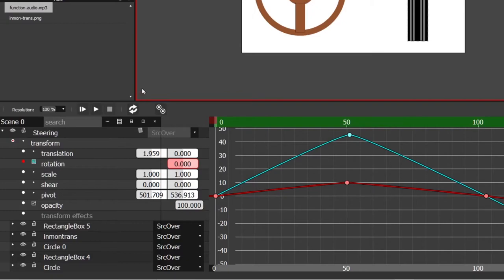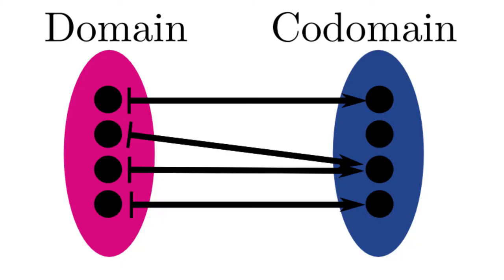In order for something to be a function it must have an output for every possible input that is in the domain and that output has to be consistent.